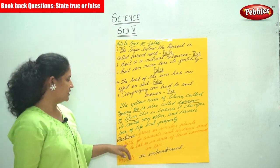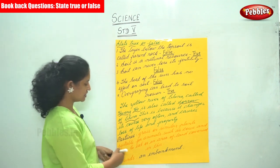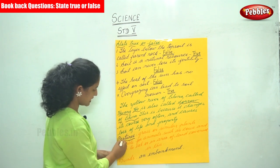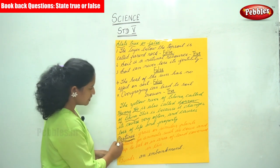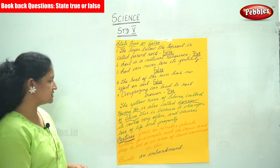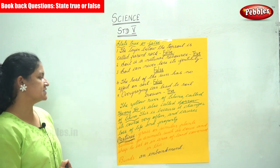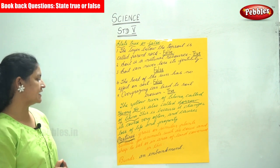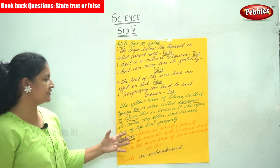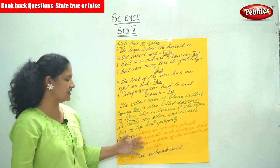What do we mean by the term pastures? Pastures are nothing but grass or similar plants suitable for animals such as cows and sheep to eat, or an area of land covered in this.